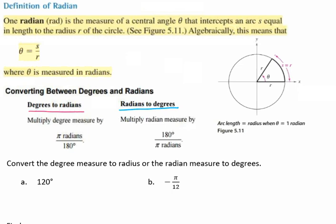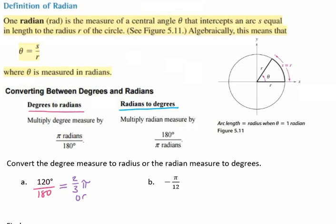We're going to convert 120 degrees into radians. We're going from a degree to a radian, so we multiply the degree by pi over 180. The easiest way to do that is simply to divide 120 by 180, which gives you two-thirds, and just put the pi next to it. So two-thirds pi and two pi over three are the same thing. Most times we see it written as two pi over three.